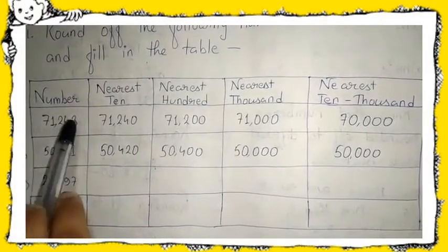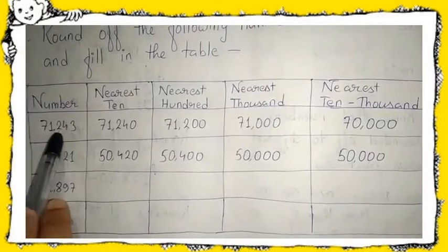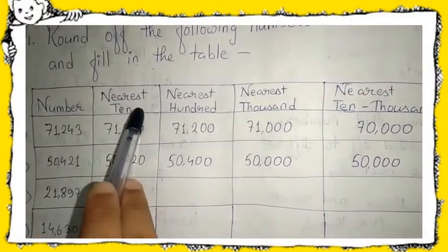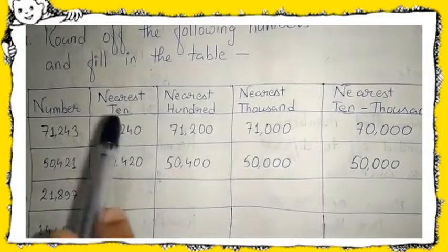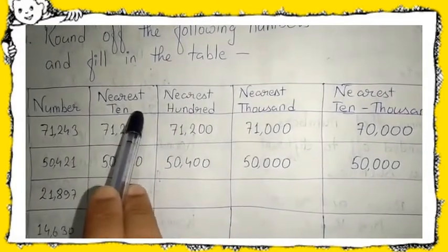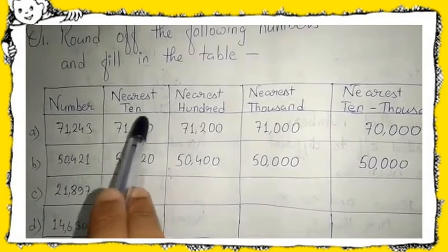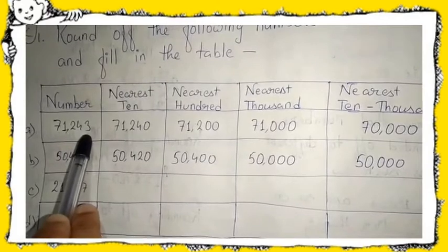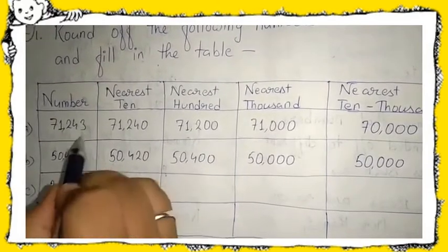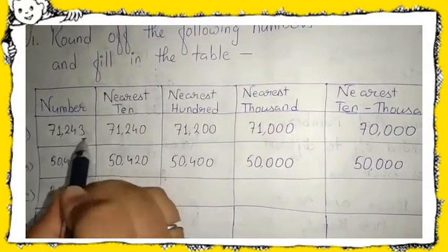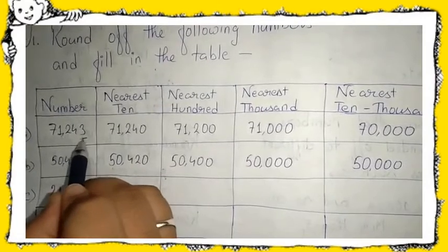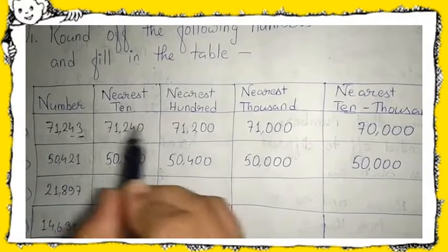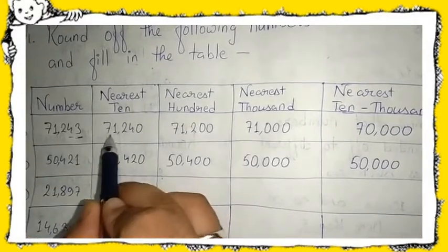This sum is based on that only. Here your first number is seventy-one thousand two hundred forty-three, which you have to round off to the nearest ten, hundred, thousand, and ten thousand. First, let us change it to the nearest ten. For that, you have to look at the ones place. Here in the ones place it is three, and three is less than five, so you cannot round it up, so your nearest ten will be seventy-one thousand two hundred forty.